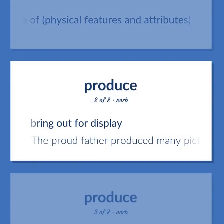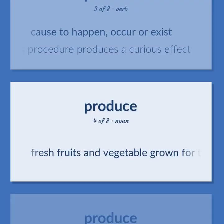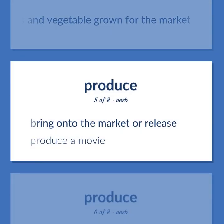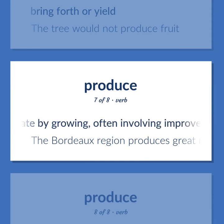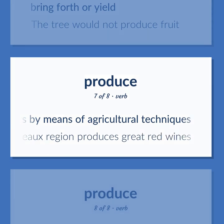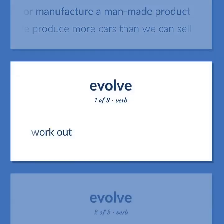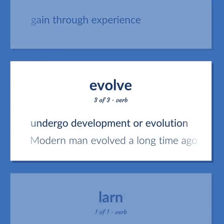Produce: Bring out for display — the proud father produced many pictures of his baby. Cause to happen, occur, or exist — this procedure produces a curious effect. Fresh fruits and vegetables grown for the market. Bring on to the market or release — produce a movie. Bring forth or yield — the tree would not produce fruit. Cultivate by growing, often involving improvements by means of agricultural techniques — the Bordeaux region produces great red wines. Create or manufacture a man-made product — we produce more cars than we can sell. Work out. Gain through experience. Undergo development or evolution — modern man evolved a long time ago.